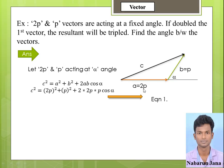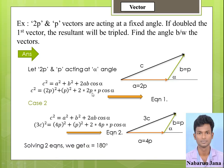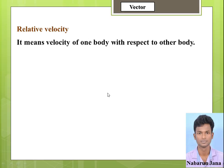Applying C² = A² + B² + 2AB cos α with A = 2p and B = p gives equation 1. For case 2, doubling the first vector means A becomes 4p (doubled from 2p), B stays p, and the resultant triples to 3C. Applying the formula again gives equation 2. Solving equations 1 and 2 together, we get alpha = 180 degrees. This is how we find the angle between the two vectors.